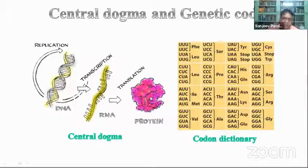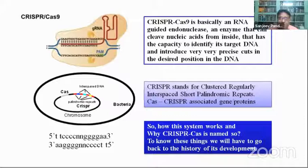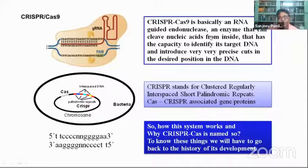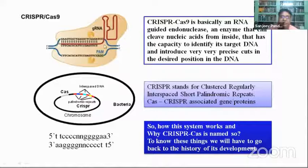These things are required for our basic understanding of CRISPR-Cas9. In its present form, CRISPR-Cas9 is basically an RNA-guided endonuclease — an enzyme that can cleave nucleic acids from within the DNA. It has the capacity to identify its target DNA and introduce very precise cuts at the desired position. You need a single guide RNA and this Cas protein; it finds its target DNA and introduces a double-strand break.